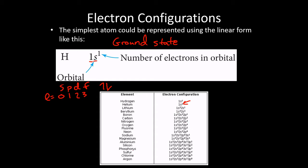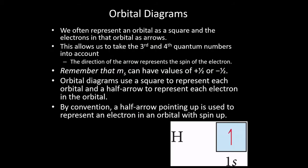As we keep going to larger elements, we add from one subshell to the next. Skipping ahead to phosphorus, which has 13 electrons, we have: two in the 1s, two in the 2s, six in the 2p — because p subshells have three orbitals, two electrons each, giving a maximum of six — then 3s², and finally 3p³. So we're just filling in starting with the lowest energy and working our way up.